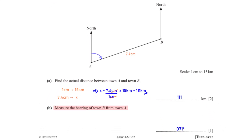To measure the bearing of town B from town A, on the scale drawing we've indicated the bearing of town B from town A. Using a protractor, when we measure this angle we get 71 degrees.